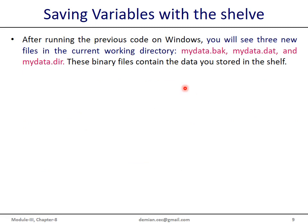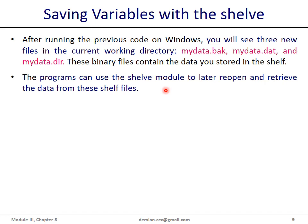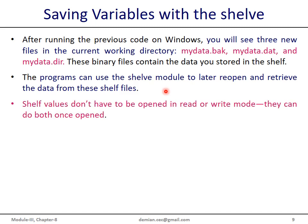After executing the previous program on Windows, you will see three new files appear in the current working directory: my_data.bak (backup), my_data.dat (data file), and my_data.dir (directory file). 'my_data' is the filename we supplied to the shelf.open method. These binary files contain the data we stored in the shelf. Programs can later use the shelf module to reopen and retrieve data from these shelf files. Note that shelf values don't need to be opened in read or write mode — once opened, you can perform both read and write operations without specifying a mode.